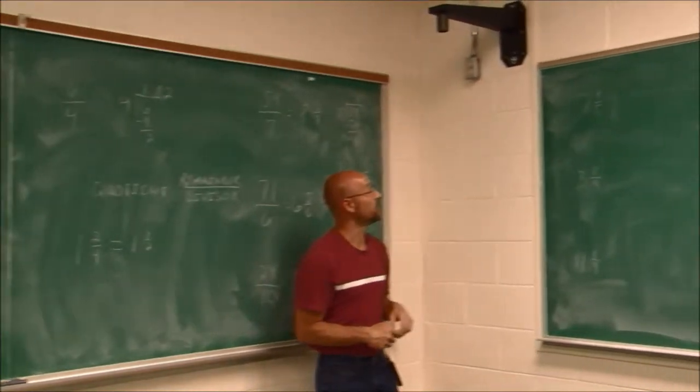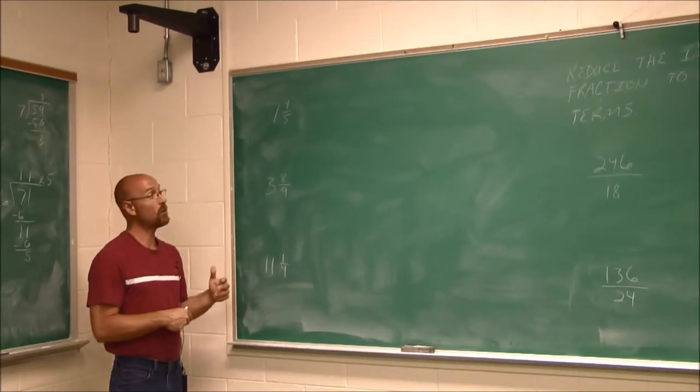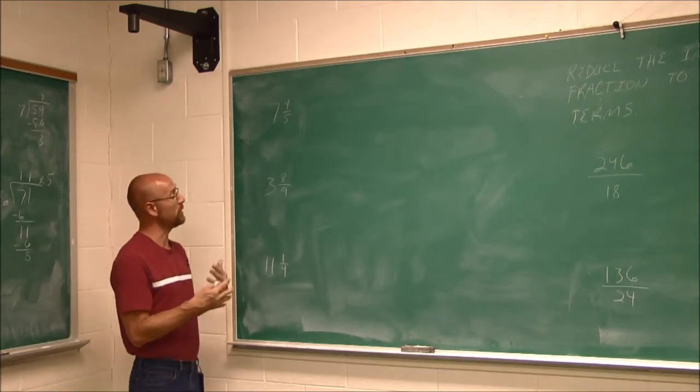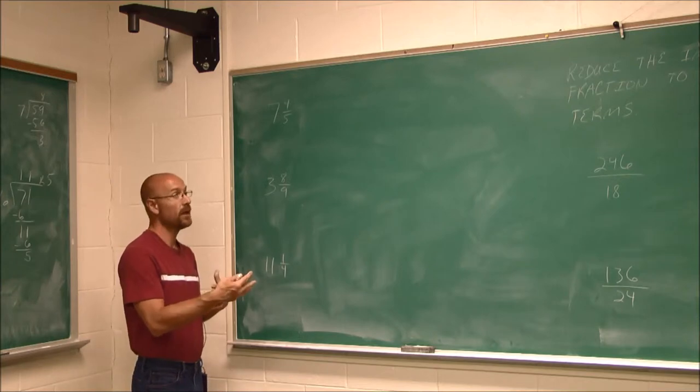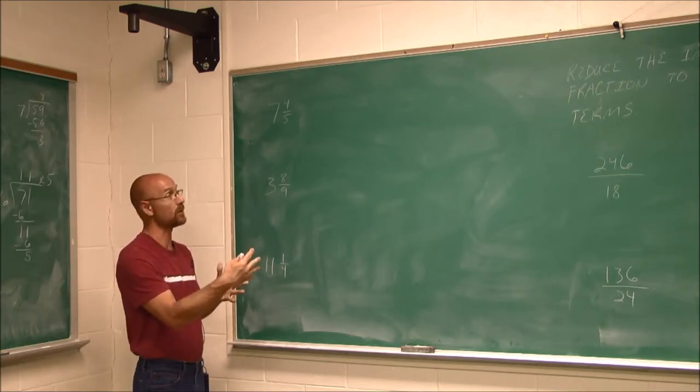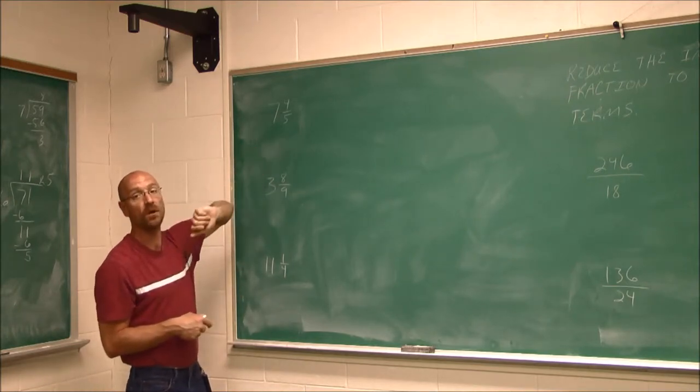All right, so we're going to move over to here. And we're going to say, well, what if we have a mixed number to start with and we want to go back to an improper fraction? Well, if we recall what we did before, we did division and then added the remainder over the divisor. Well, here we work that backwards. Instead of division, we're going to use multiplication.